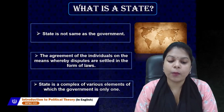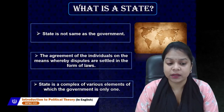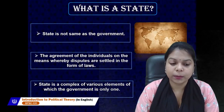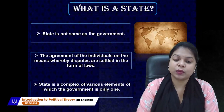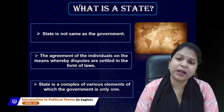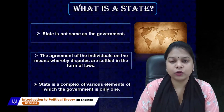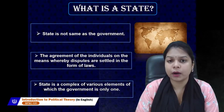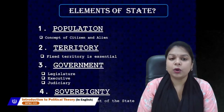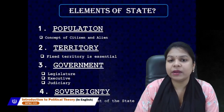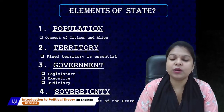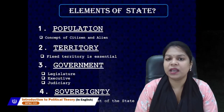The state is a complex of various elements of which the government is only one. Let's see what are the elements of state — what are the things which constitute a state.